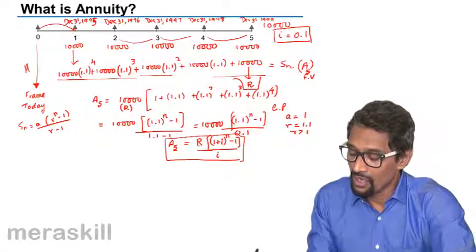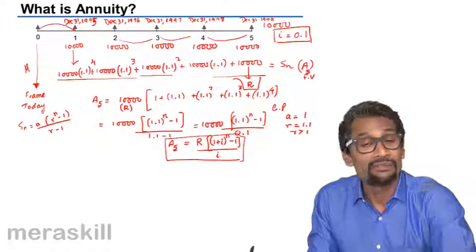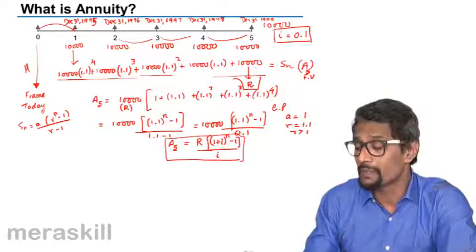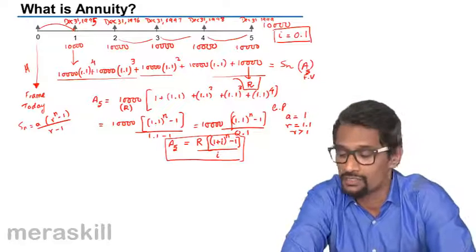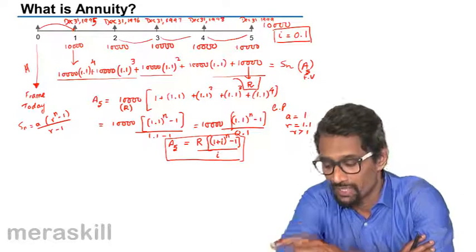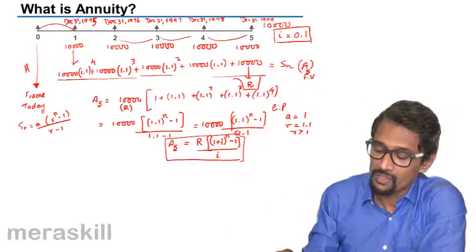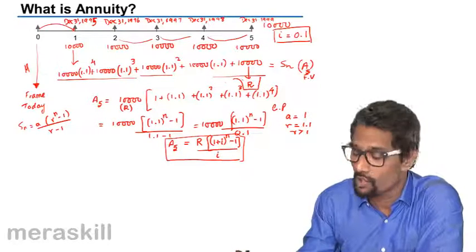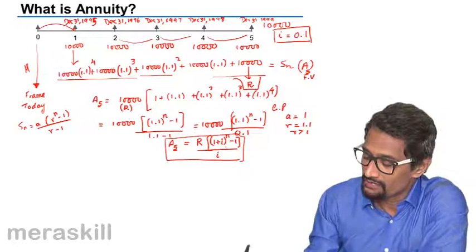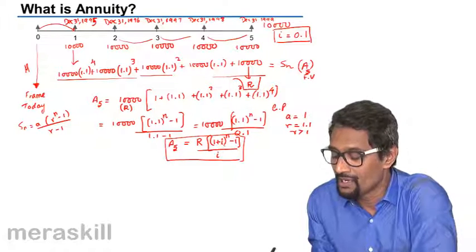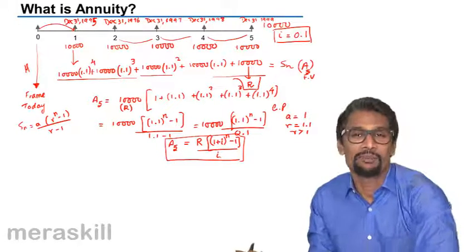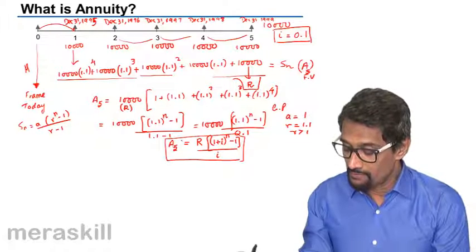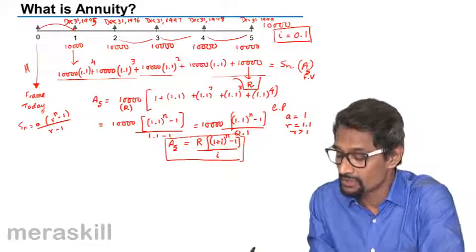A₅ equals R into (1 + i) raised to n, minus 1, divided by i. This formula is derived logically — since the interest rate remains fixed, the ratio of consecutive terms is constant, making it a geometric progression. For a short period you can calculate step by step, but for 20 or 30 years you use this formula. This is the formula for the future value of an annuity.